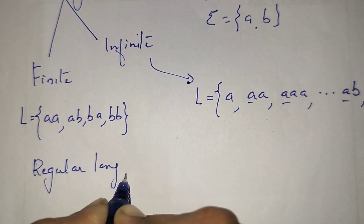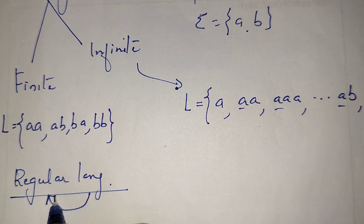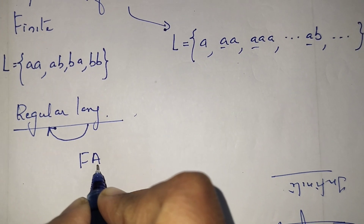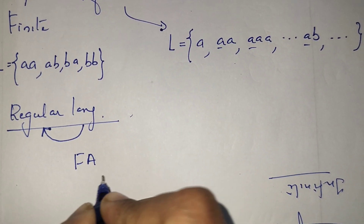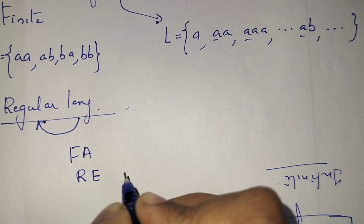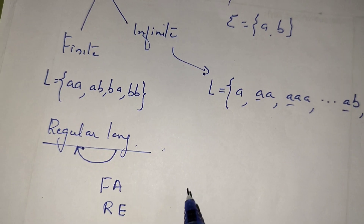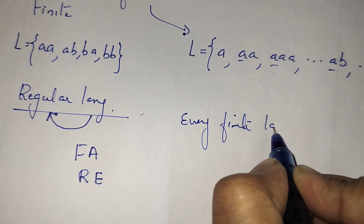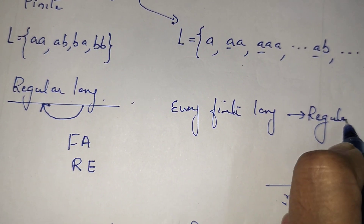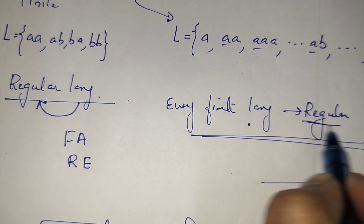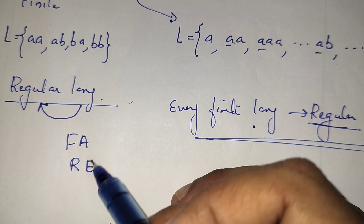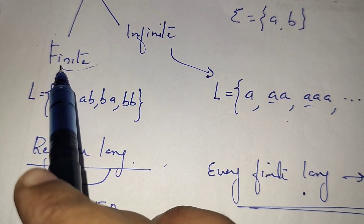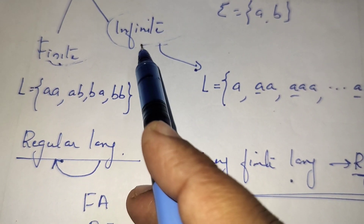What is a regular language? A language is said to be regular if there exists a finite automata for representing the language, and we can represent the language using a regular expression. Every finite language is regular — if a language is finite, we can definitely design a finite automata and represent it using a regular expression. All finite languages are regular. But what about infinite languages?